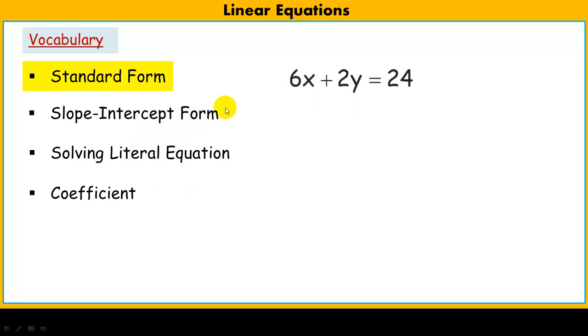So standard form is something like this. This is an example of a linear equation in standard form. And what you'll notice is both the x and y, those variable terms, are both on one side and the constant 24 is on the other.